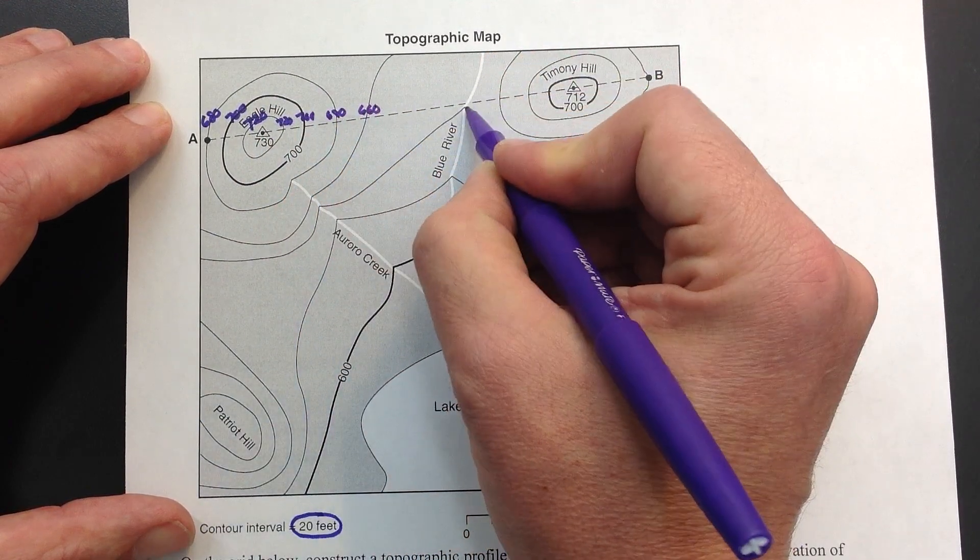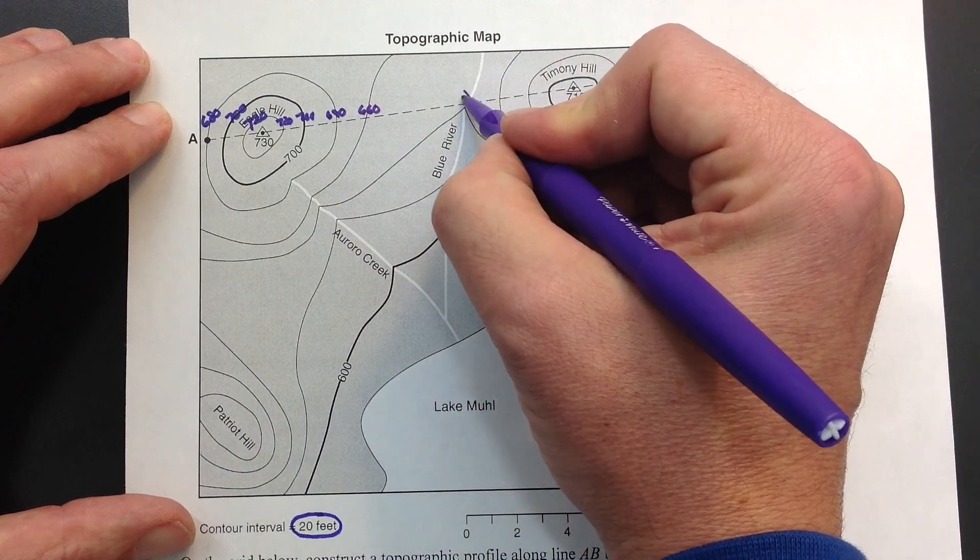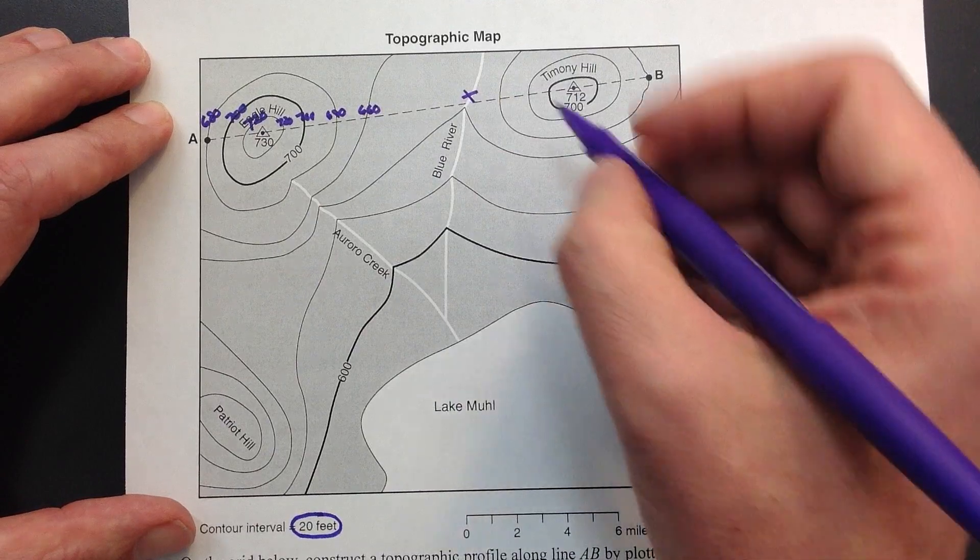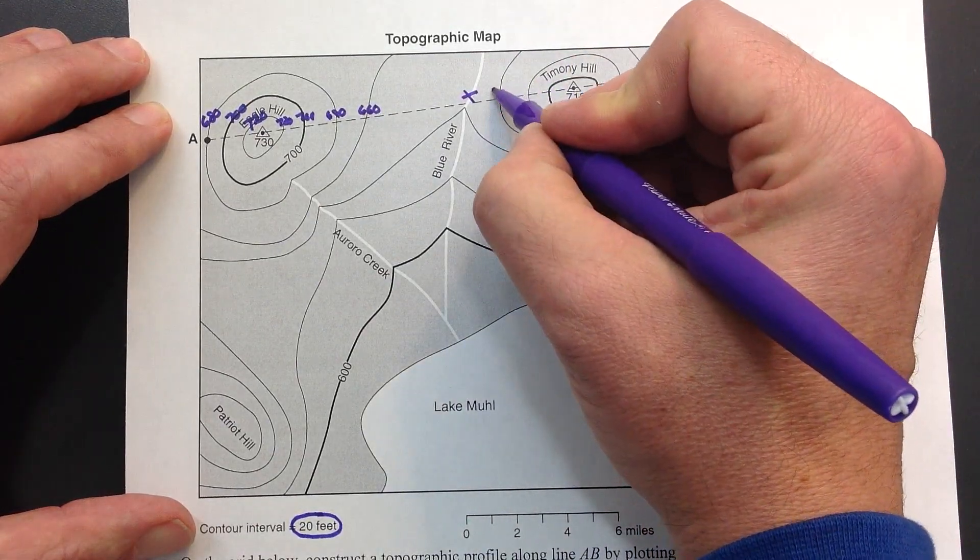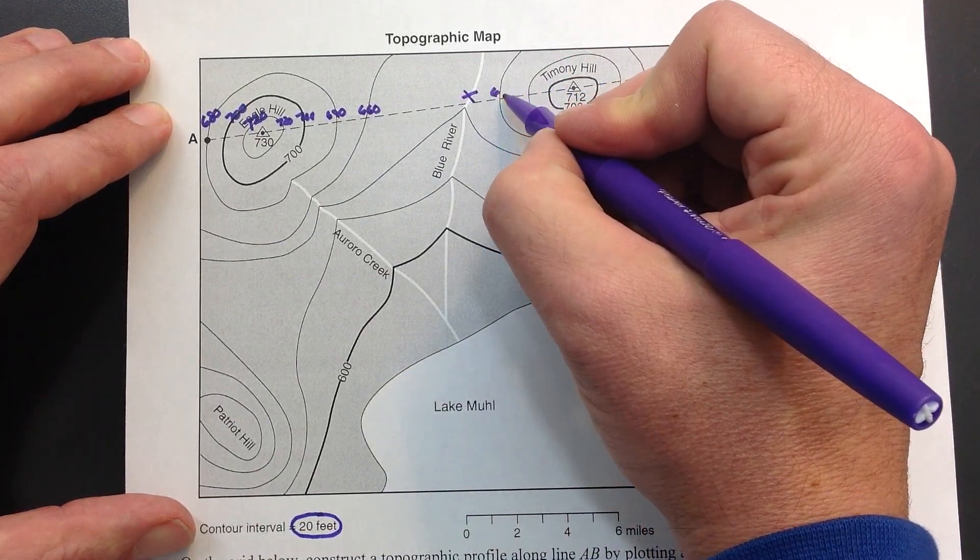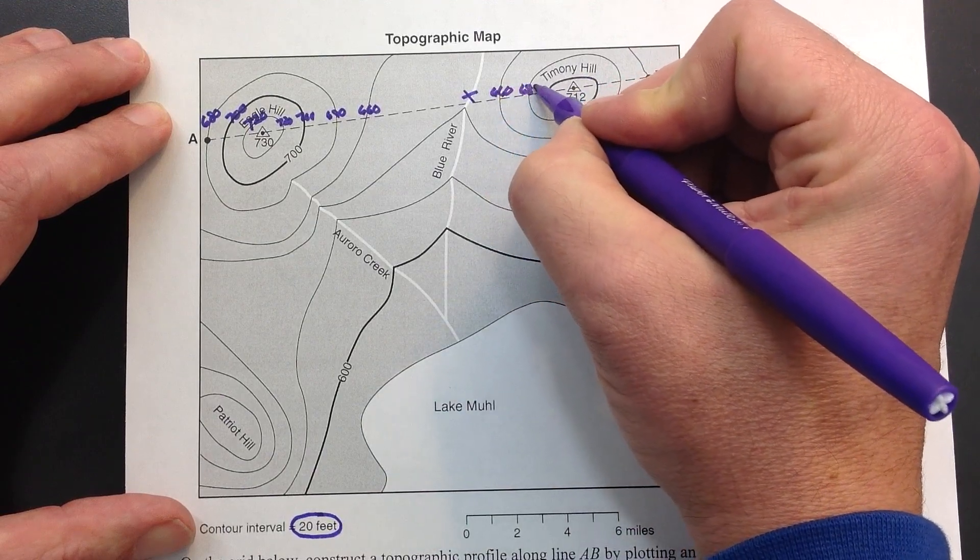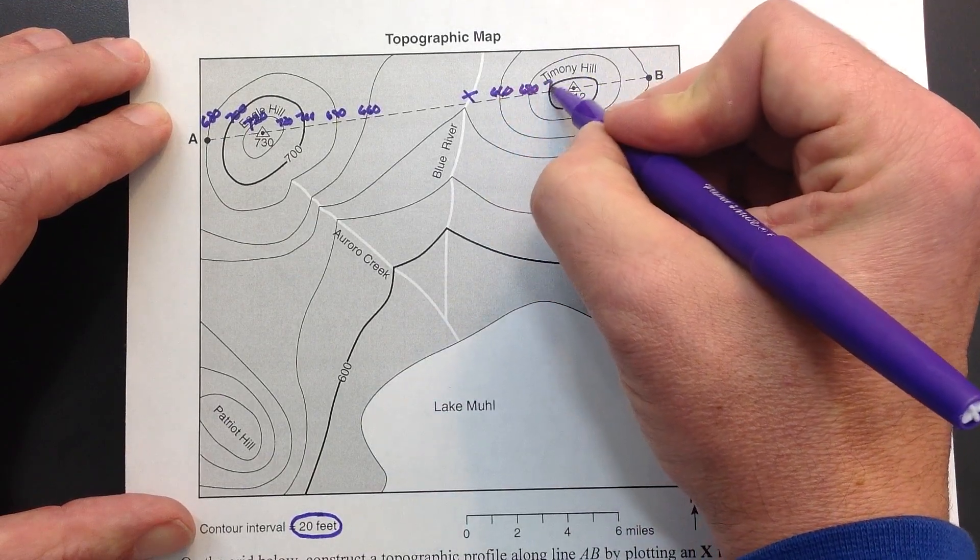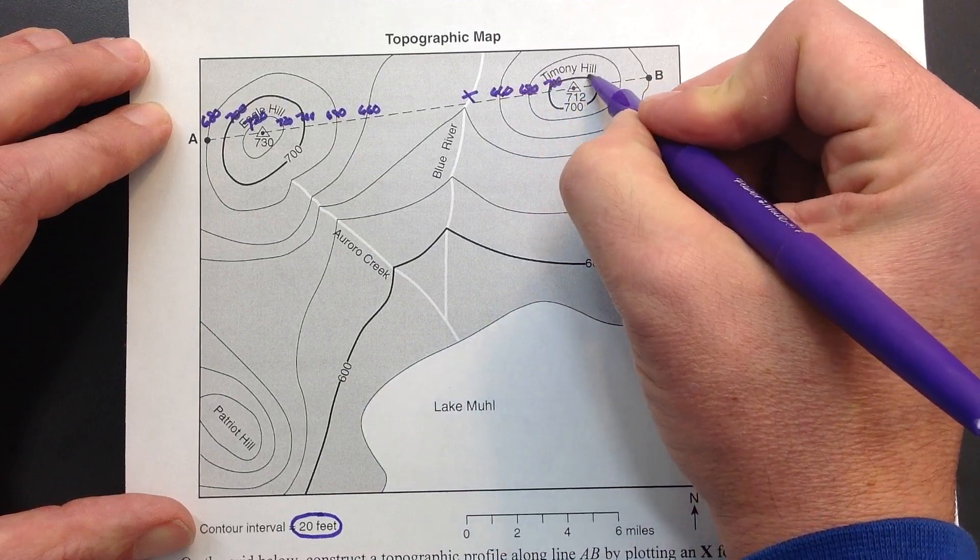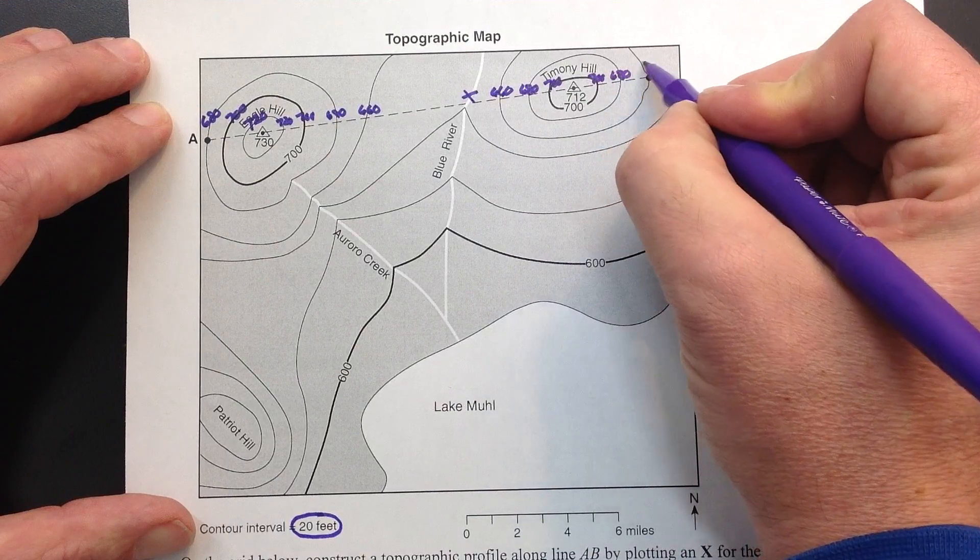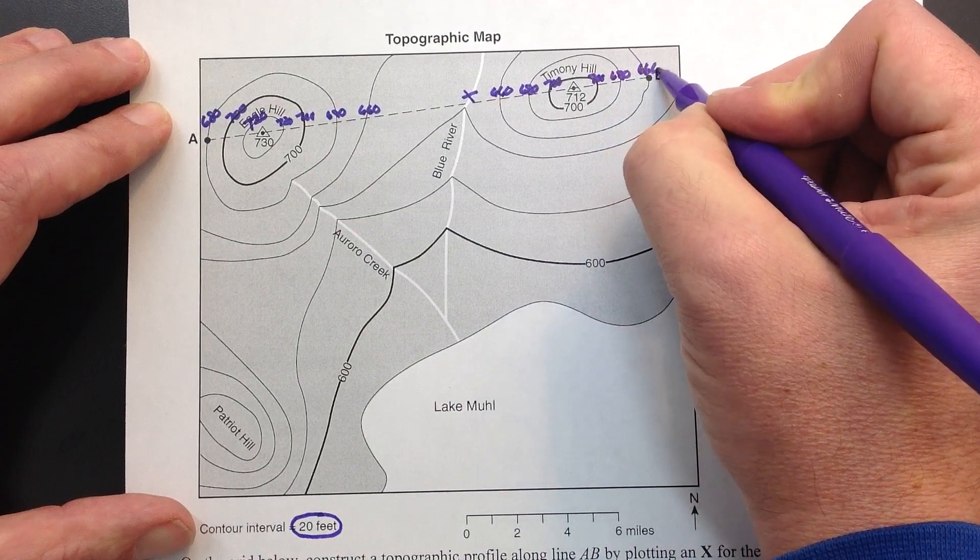660, down to the river. The river here is not a contour line, so we're not going to include that in our profile. Back up Timony Hill. 660, 680. This line again here is 700. This line here is 700. 680, and then back down to 660.